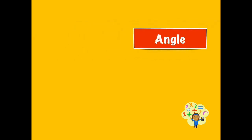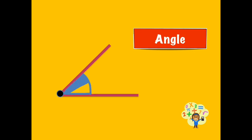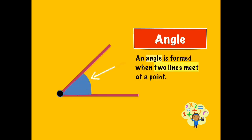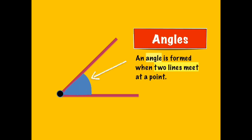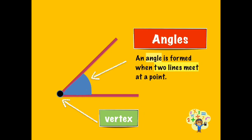What is an angle? An angle is formed when two lines meet at a certain point. The point where lines meet in an angle is called the vertex.